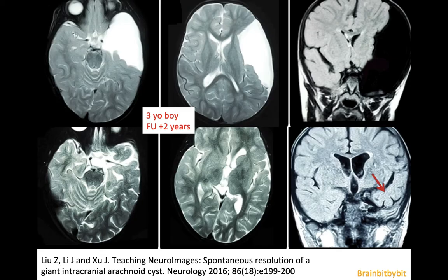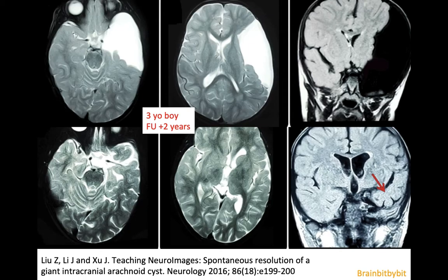Arachnoid cysts can disappear spontaneously; there are several case reports about that. This is a case report about a three-year-old boy who had an arachnoid cyst in the temporal pole and insular cistern that disappeared on follow-up MRI at age five. There are also case reports showing that a large arachnoid cyst can evacuate into the subdural space and the CSF is then absorbed — that may be a mechanism of resolution.